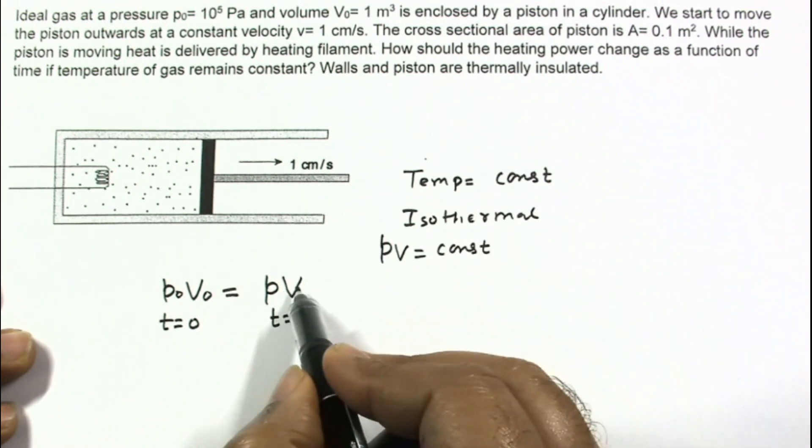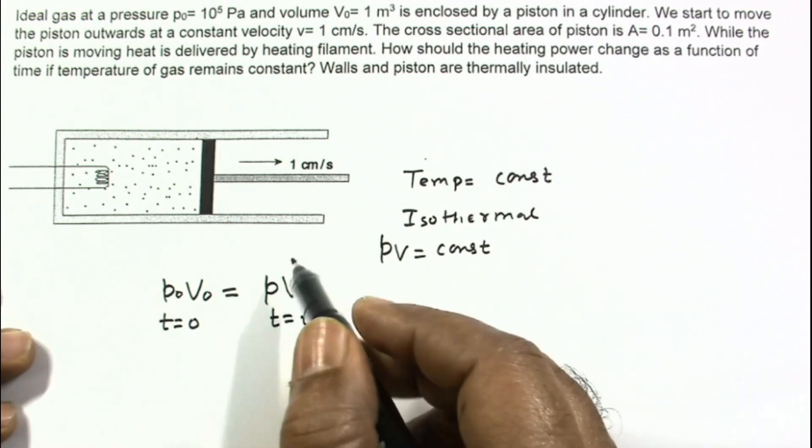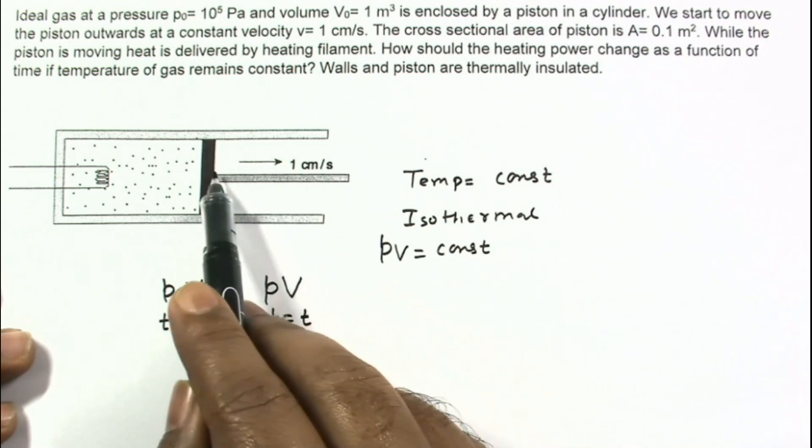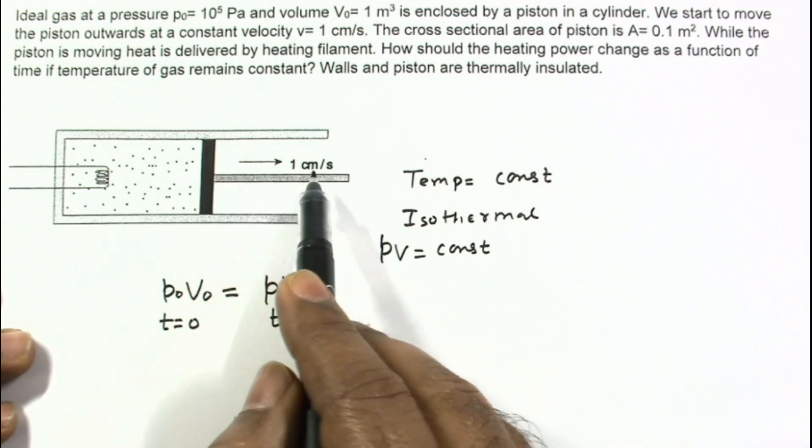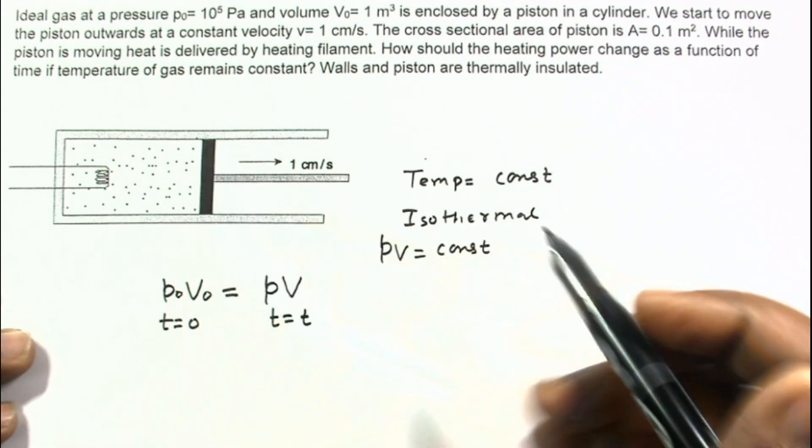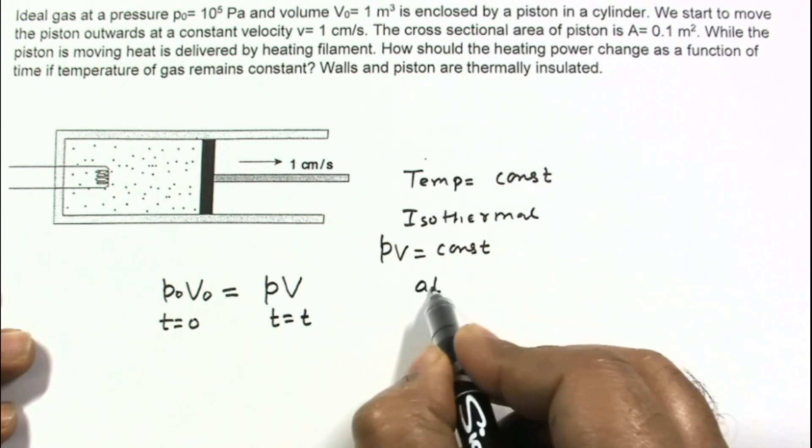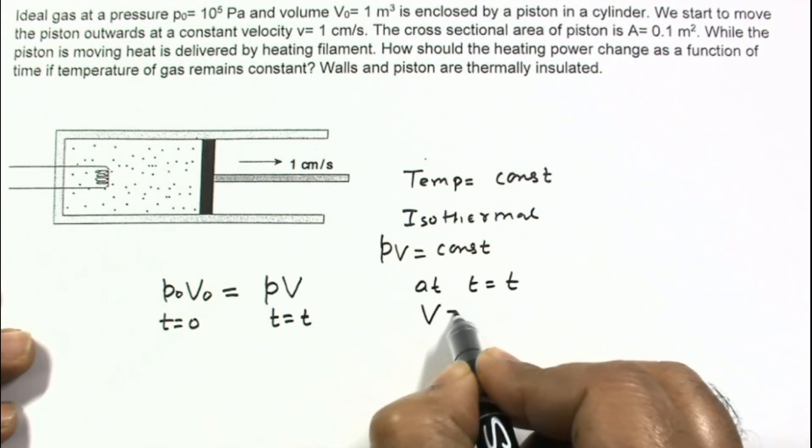Volume we can calculate from the information that the piston is moving with constant velocity and area is also given. So at T equals T, volume of the gas will be,